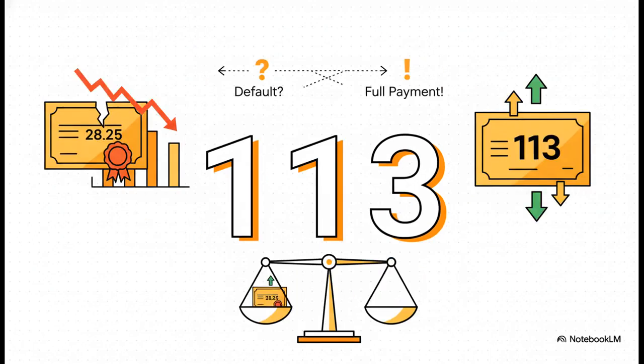And the good scenario? Well, if the company makes all its payments, investors get the full value, which is our benchmark amount, the same as the government bond, $113. So the two potential payouts we're working with are $28.25 and $113.